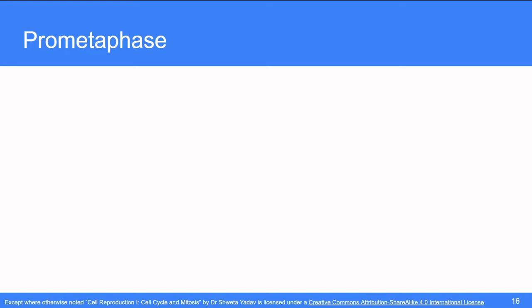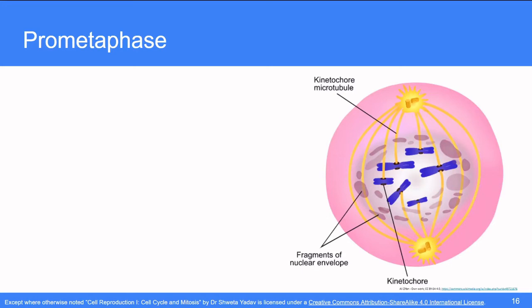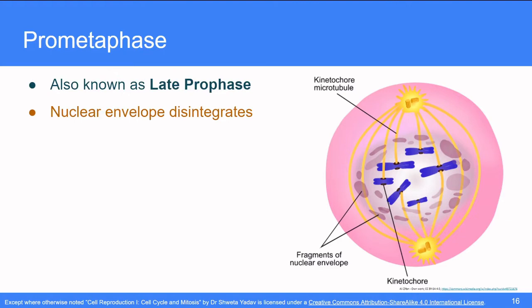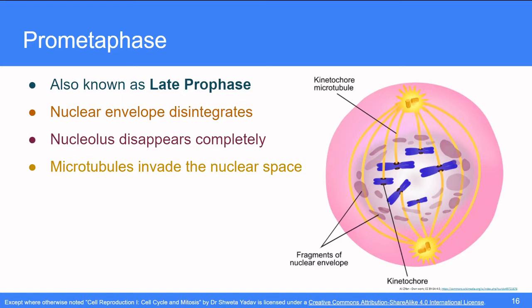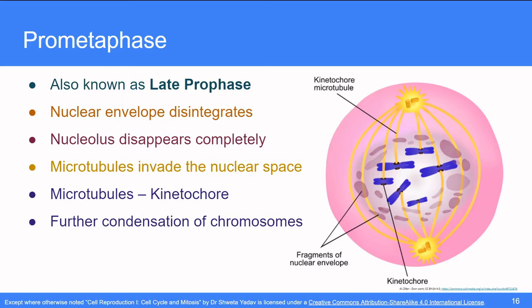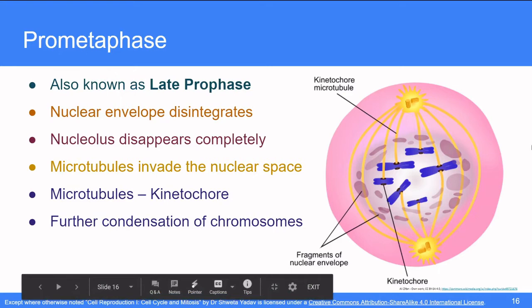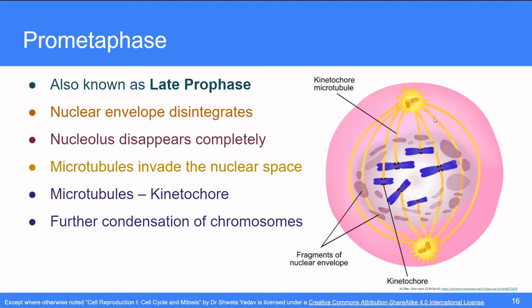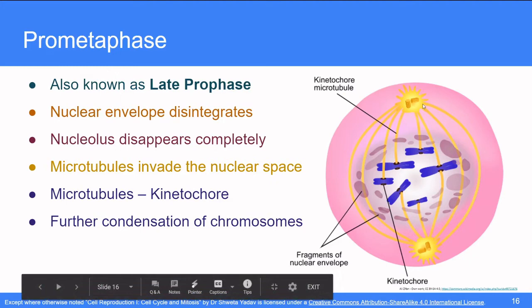The next phase is prometaphase. This phase is also known as late prophase. Here, the nuclear envelope disintegrates completely. The nucleolus disappears completely. As there is no nuclear envelope, the microtubules invade the nuclear space and bind to the kinetochores of the sister chromatids. The chromosomes keep condensing further. You can see in the diagram that the kinetochores are now bound to the spindle and the nuclear envelope has disappeared. There are some continuous spindles which are going from one pole to the other. These spindles are known as the continuous spindles or continuous fibers.